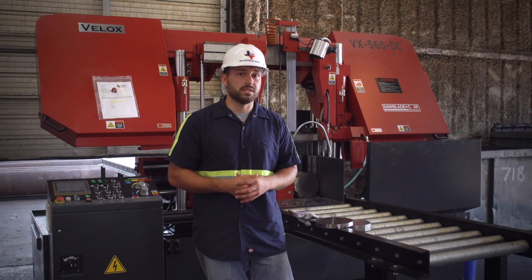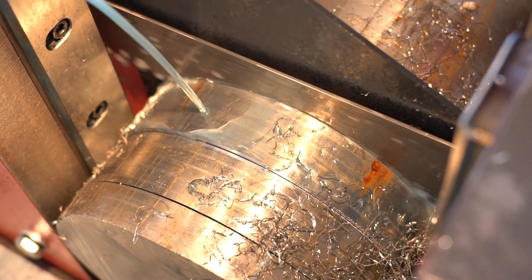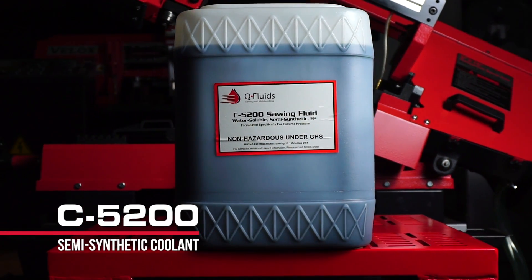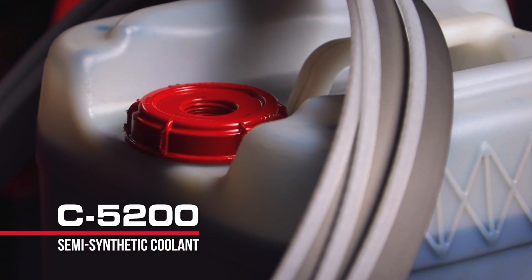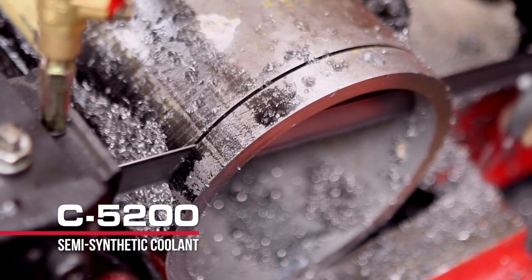It's also going to help us in this cutting process. When cutting high tensile strength materials you tend to build up a lot of heat, so we're going to be using sawblade.com's C5200 industrial sawing fluid. It's got a great detergent package with good lubricators that's going to keep the heat and the chip away from the part and the blade.